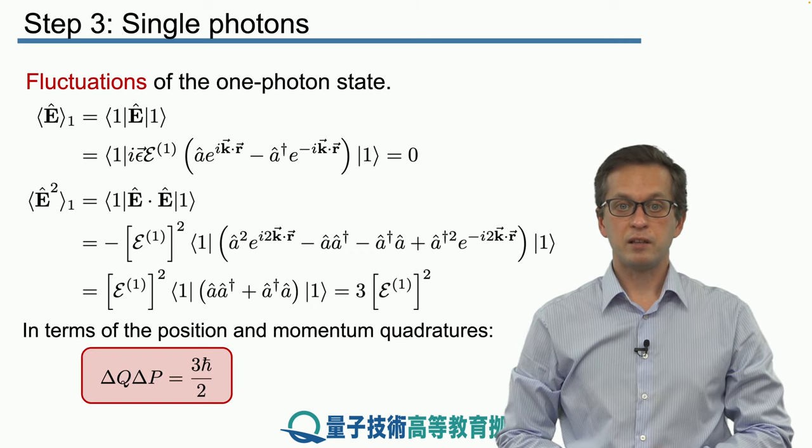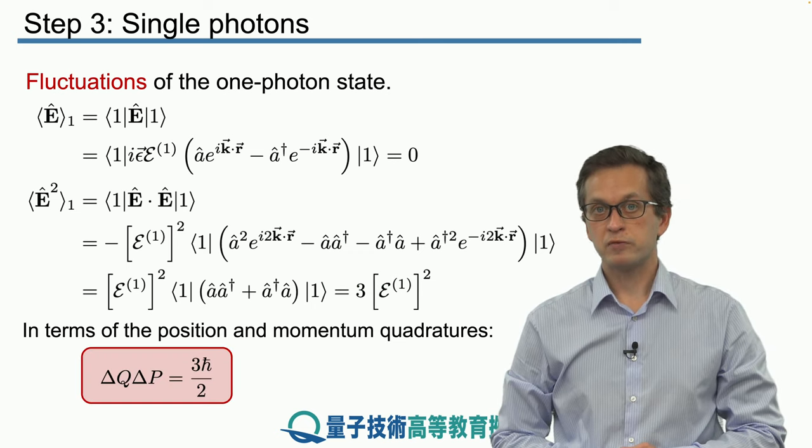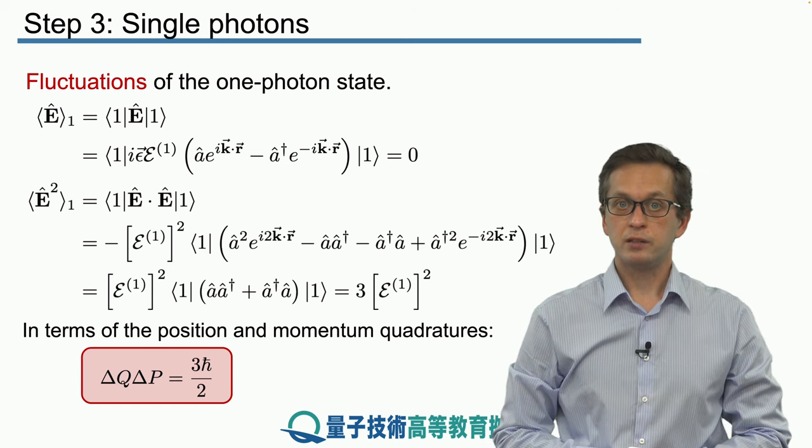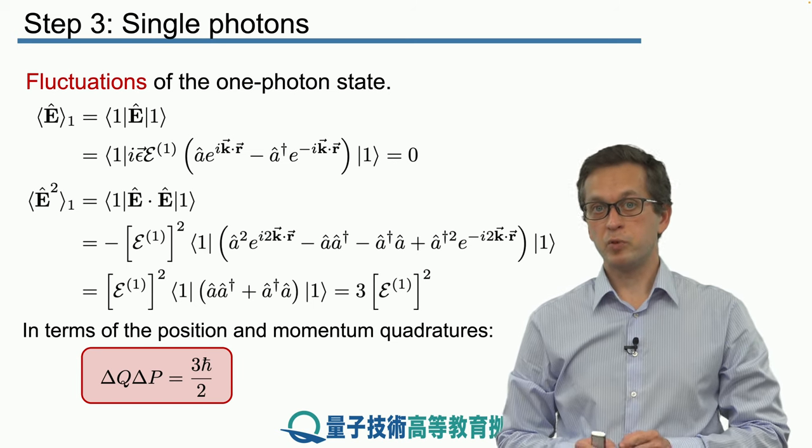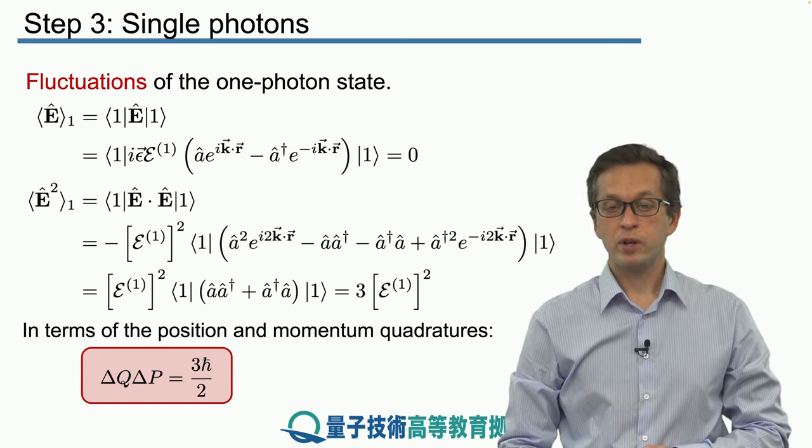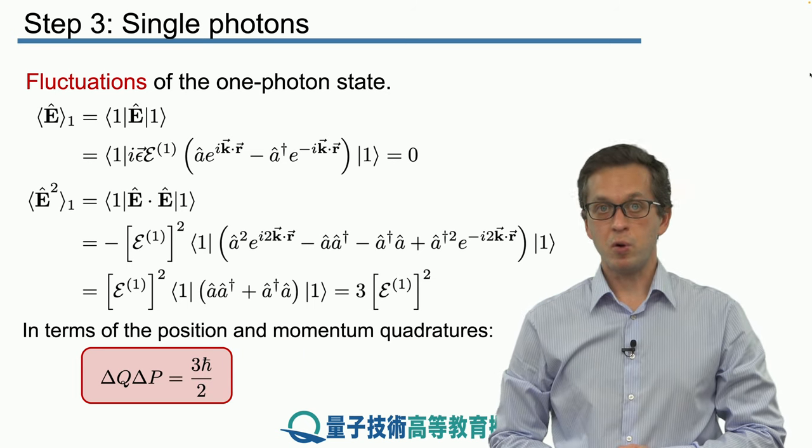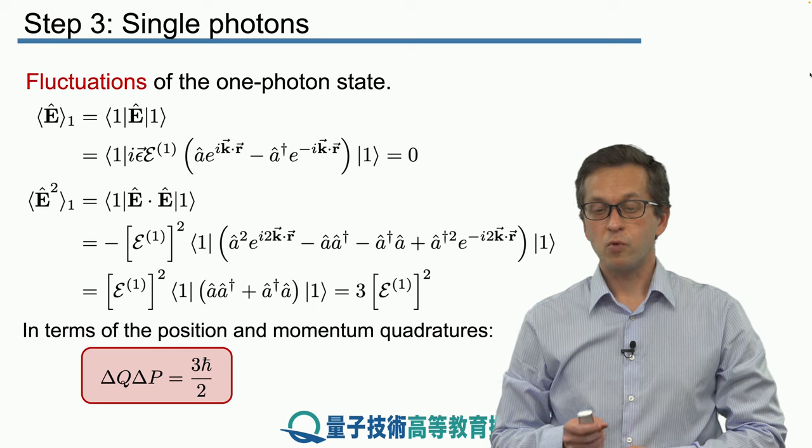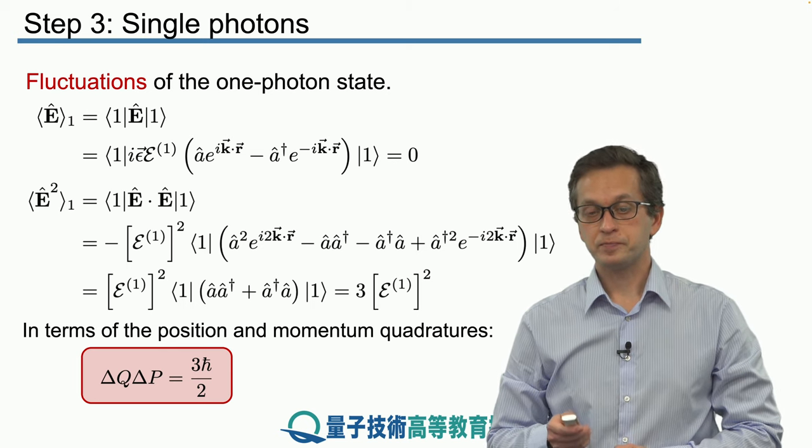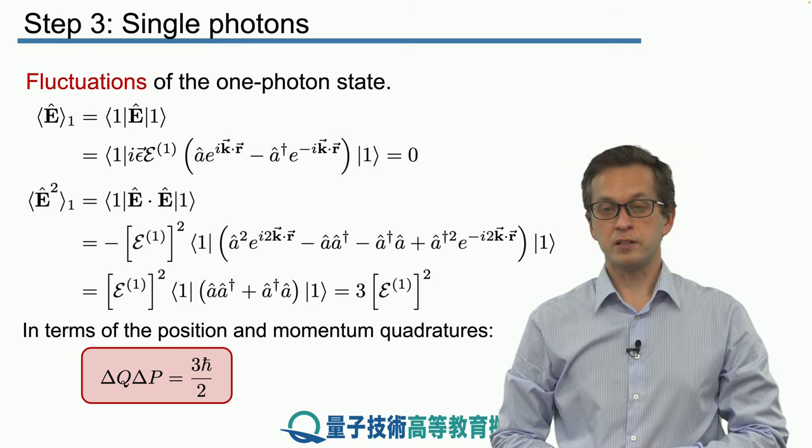And immediately we see that if we compute the fluctuations for the position quadrature delta q and the fluctuations for the momentum quadrature delta p, we get that they are equal to three times h bar over two, meaning the one photon state is not a minimum uncertainty state.